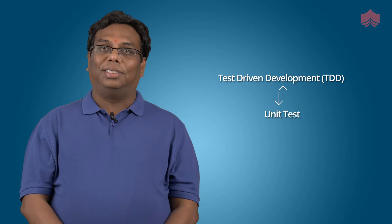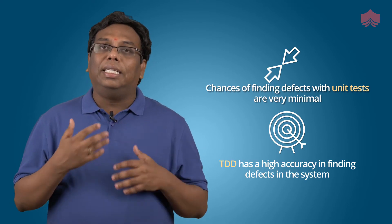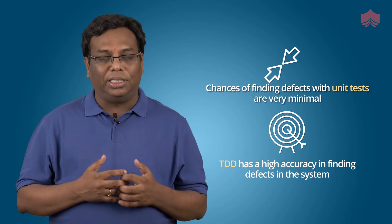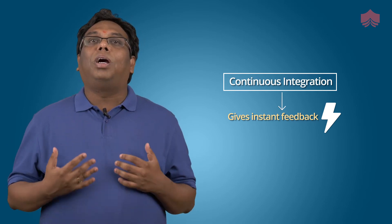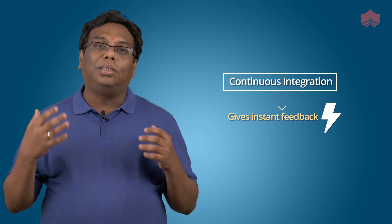For example, if you talk about TDD — TDD is a practice similar to unit testing. The flip side of writing unit tests after writing production code is that most of the time developers tend to write tests which are actually passing by default, where the chances of finding defects are very minimal. Whereas if you implement TDD, there is a high accuracy of finding defects in the system as early as possible, as and when you are building or making changes to the code. Similarly, continuous integration gives you feedback about the code written by the developer instantly — as soon as the developer checks in the code, you get feedback by implementing continuous integration practice.